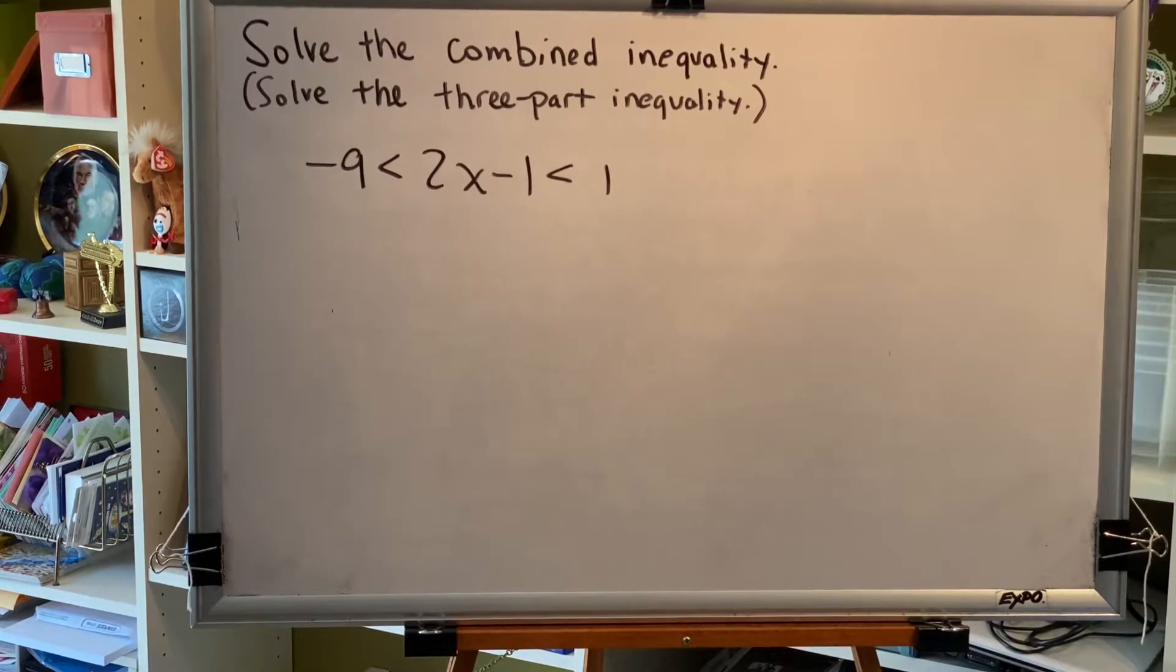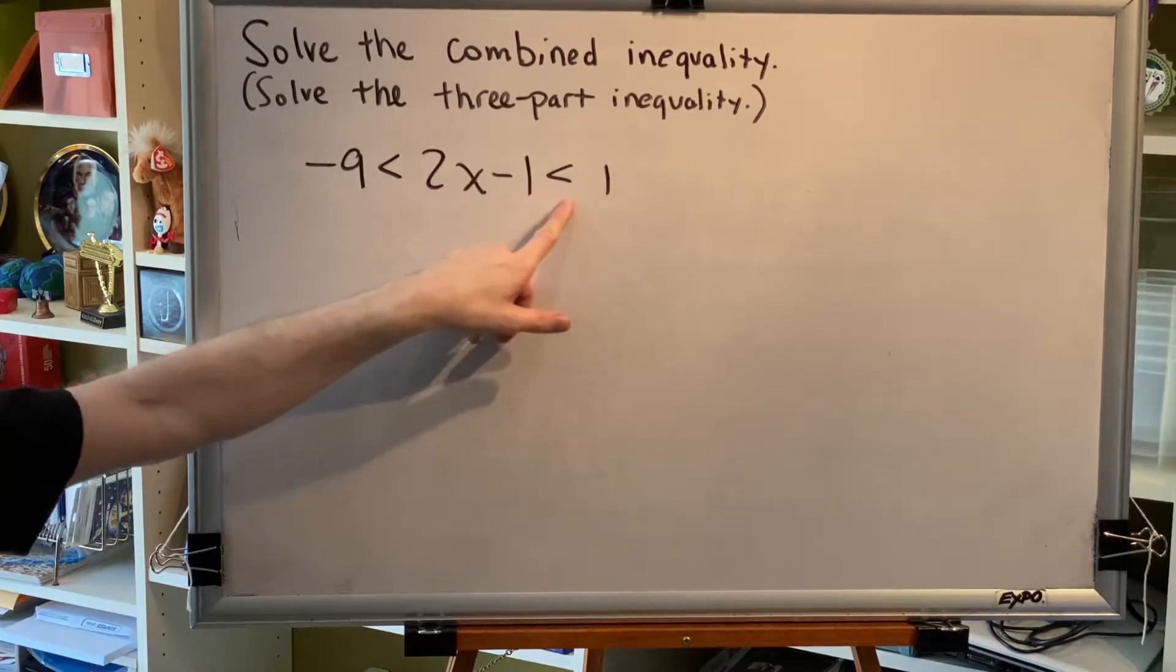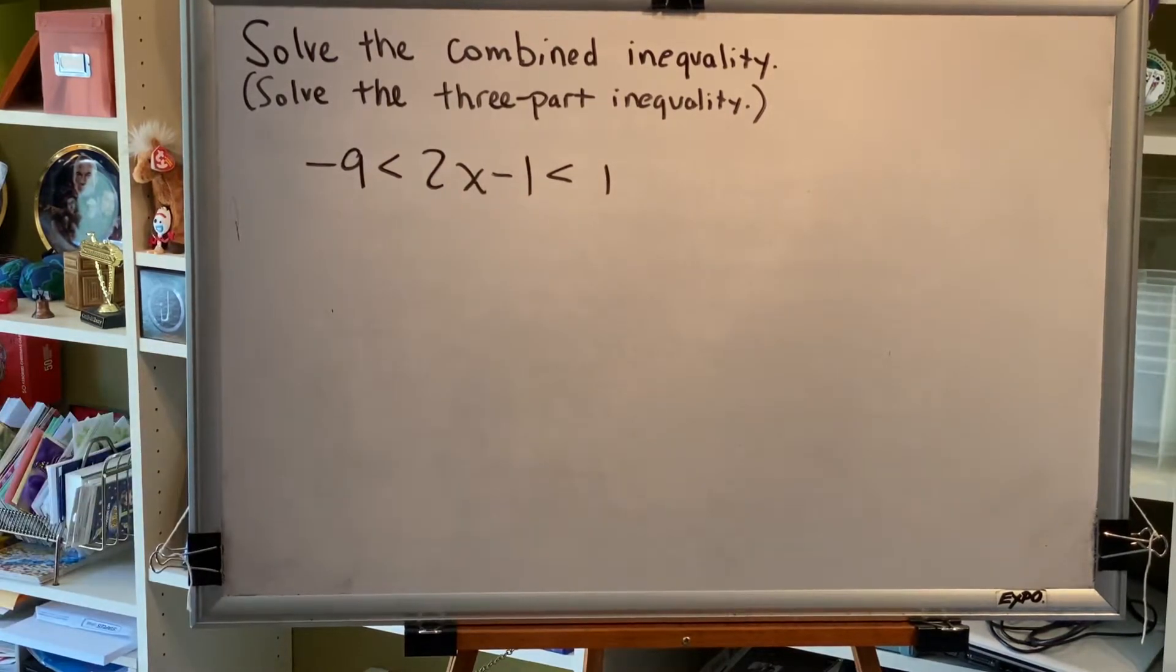If you multiply or divide all three zones by a negative value, you must reverse the direction of both inequality symbols. Let's solve a problem.